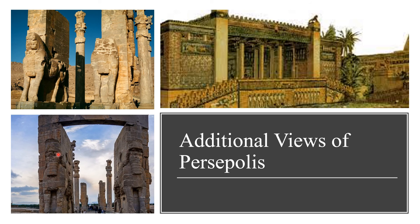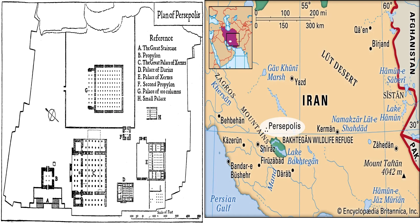Here is a plan of Persepolis. As you can see, it's multiple palaces guarded with a wall, similar to the Assyrian palaces which were also guarded with walls. Here's its location in what is now present-day Iran.